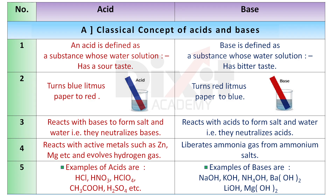Let's discuss the classical concept of acids and bases. According to classical definitions, an acid is defined as a substance whose water solution has a sour taste. Acid turns blue litmus paper to red. Acid reacts with bases to form salt and water, that is, they neutralize bases. Acid reacts with active metals such as zinc, magnesium etc., and evolves hydrogen gas.